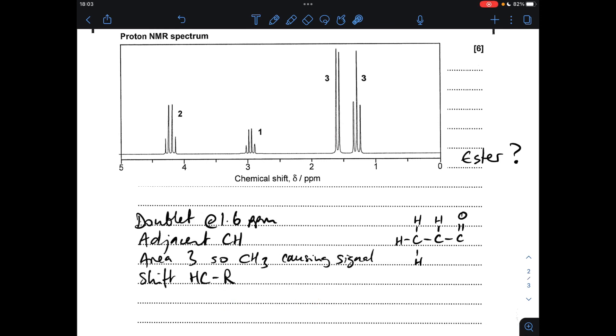We've got a doublet at delta 1.6 ppm. That means there's an adjacent CH. The area of 3 means it's a CH3 causing the signal, and the shift value is H to C to R. The reason I've left this structure on the screen is because we're now dealing with these three protons here. So three protons in an H to C to R environment, adjacent to a single proton, so that's why we see this doublet.